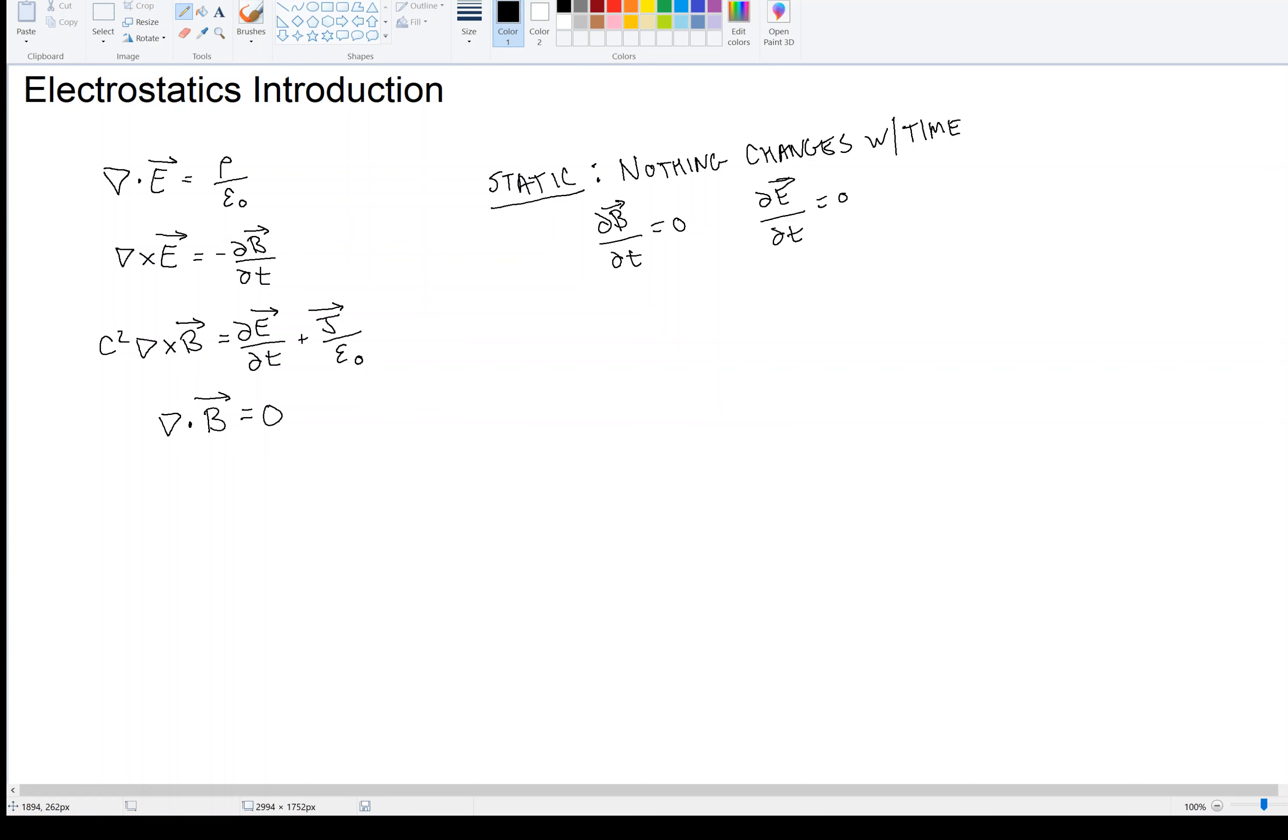Before we assume static fields, you'll see that the electric field and the magnetic field, E and B, are related to one another. In the second equation, for example, you'll see that the curl of E is related to how the magnetic field is changing. And in the third equation, you'll see that the curl of the magnetic field is related to how the electric field is changing. So in general, you cannot separate E and B.